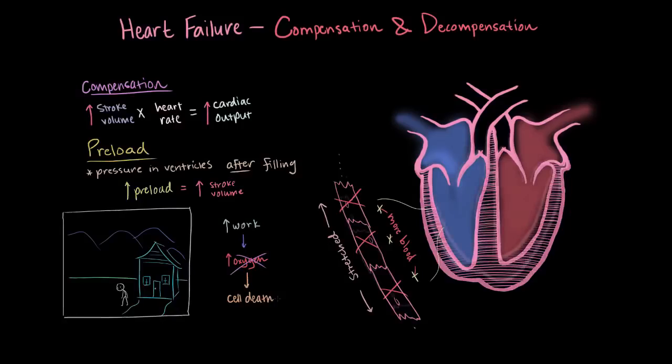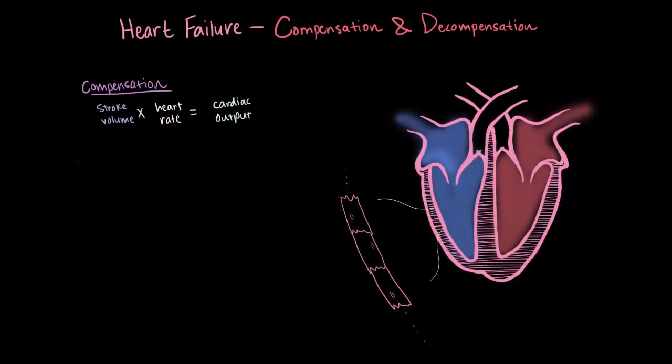So we just saw that when you contract harder, you eject more blood. Well, besides increasing preload, there's one more way we can do that, and that's gaining muscle. That's bulking up. This is also called myocardial hypertrophy, where your heart gains muscle mass.